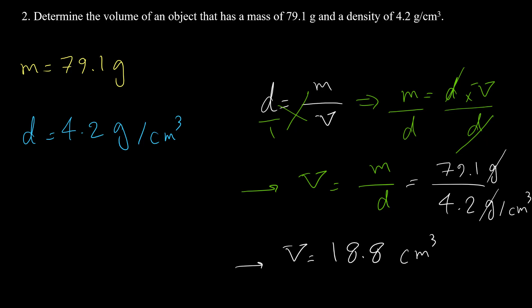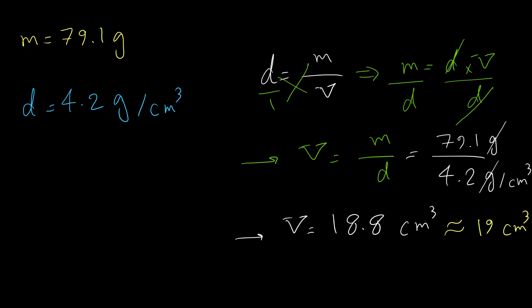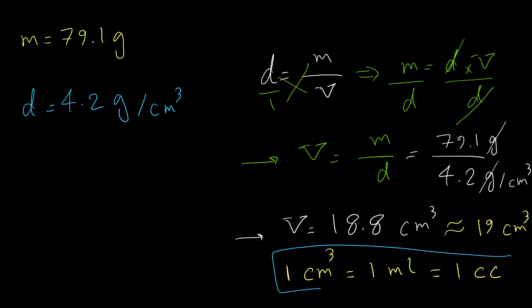Following significant figure rules, we round this to two significant digits, giving 19 cubic centimeters. Note that one cubic centimeter equals one milliliter, and cubic centimeter is sometimes written as cc — so these units are the same whether used for volume or density.